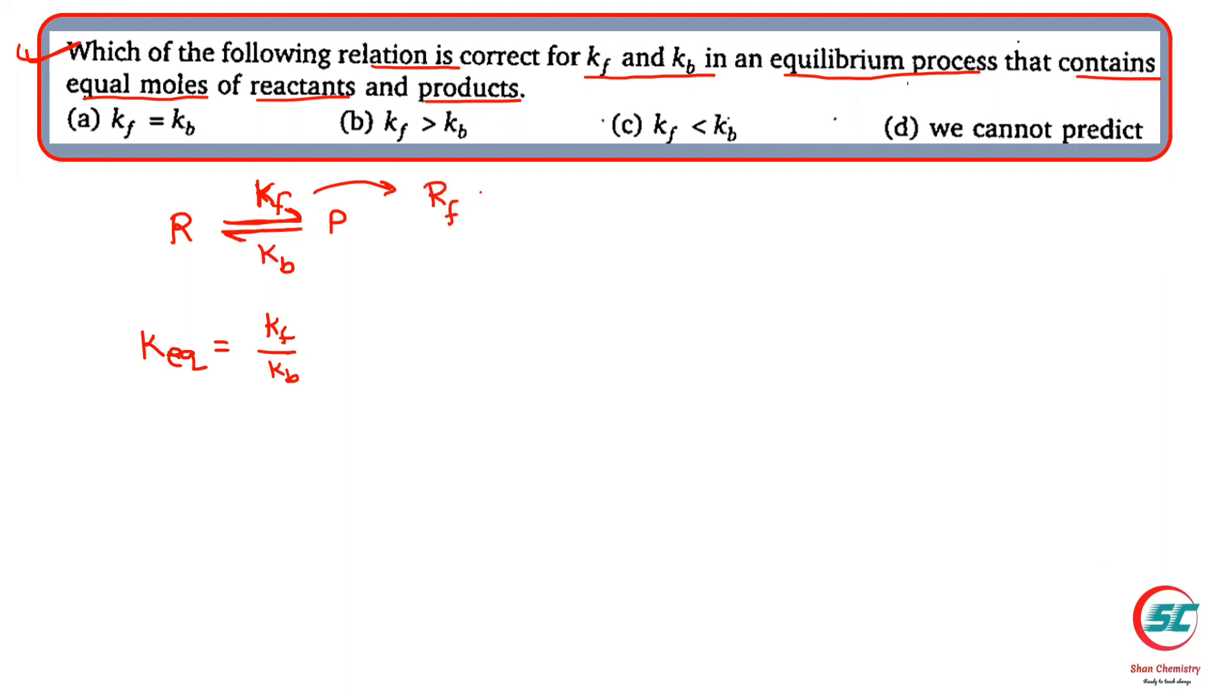What is the forward reaction rate constant? R forward is equal to k forward into concentration of reactant raised to the power n. R backward is the backward reaction rate constant, k backward into concentration of product raised to the power n.